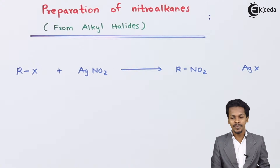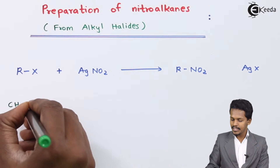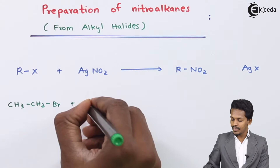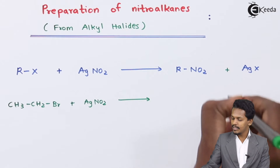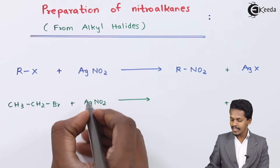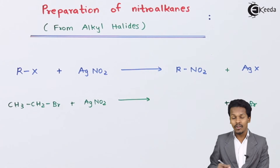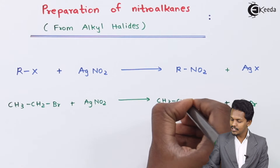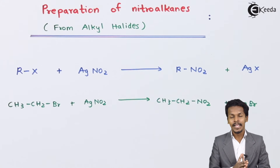For example, consider CH3CH2Br reacted with AgNO2 (silver nitrite). In this case, AgBr is removed as the byproduct and the main product we obtain is CH3CH2NO2, which is the nitroalkane. This is how we can convert an alkyl halide into a nitroalkane.